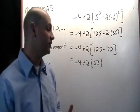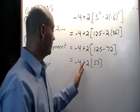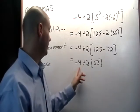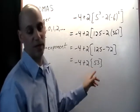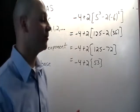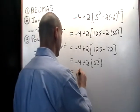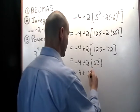And now in the last step here we have an addition and a multiplication. We have negative 4 plus 2 and we have 2 times 53. So again we're going to do the multiplication first and we're going to get 106.